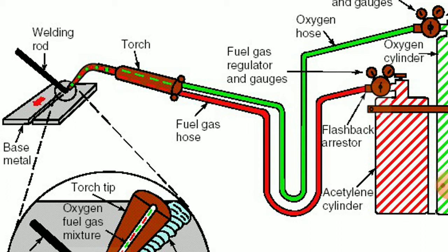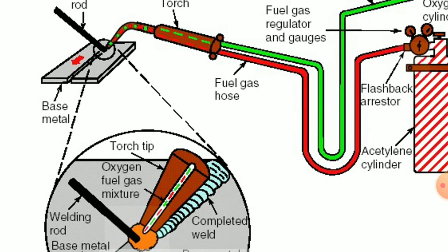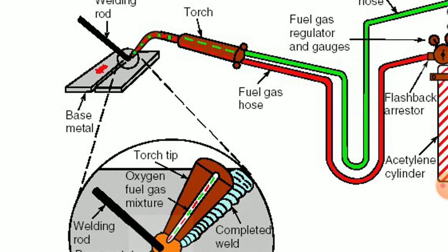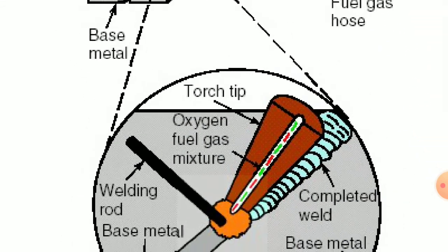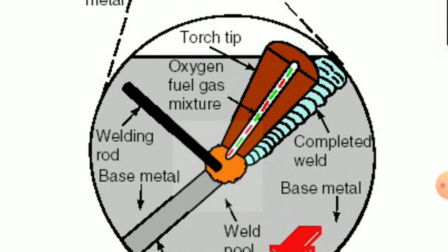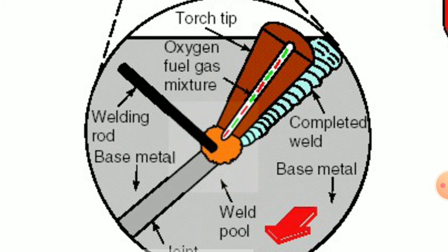The welding torch consists of a mixing chamber where both gases mix in a controlled environment and emerge out of the nozzle with ignition or a spark, generating the flame. The torch is then concentrated over the welding area. The direction of flow of the weld is indicated in the picture, with the weld bead shown in orange color at the center and the direction of weld indicated with a red arrow.